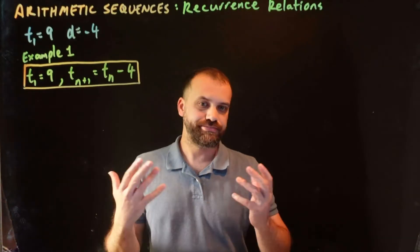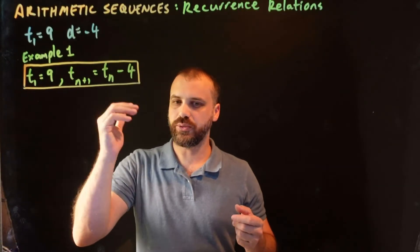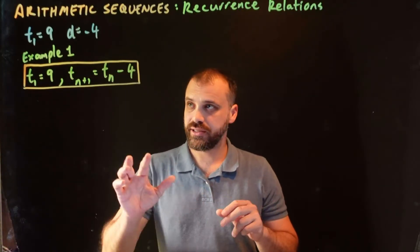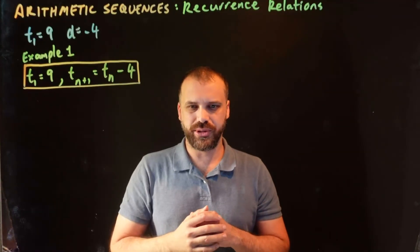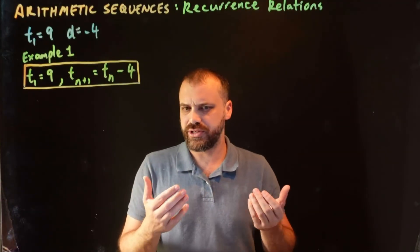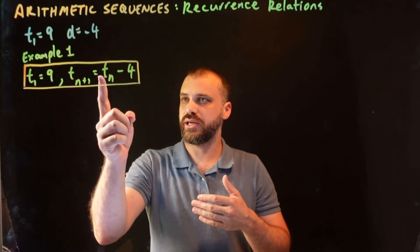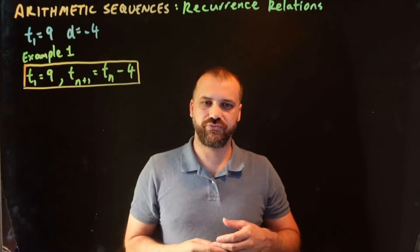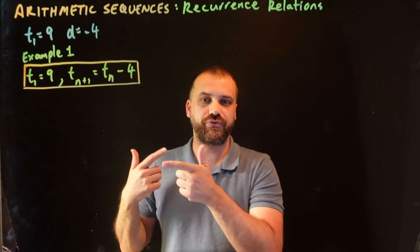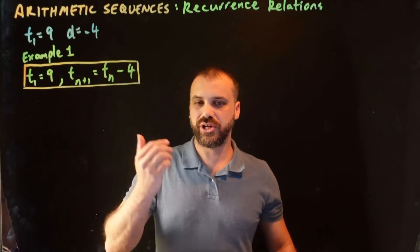This first part of it, super simple. Term 1 equals 9, so we're used to that. It's this second part of the formula that comes across as very strange. Let's use this formula, t_n+1 = t_n - 4, to come up with the first few terms of this sequence, just like we did before.